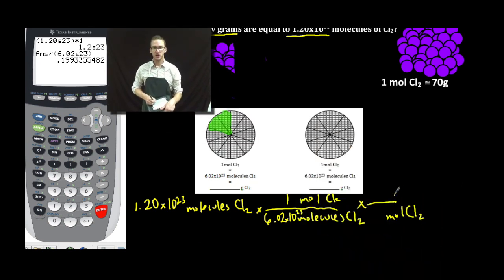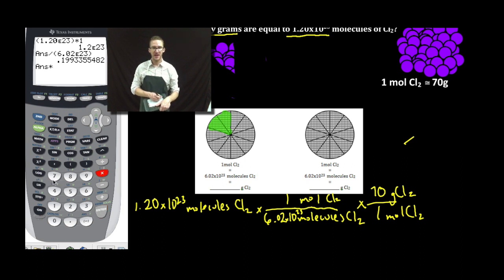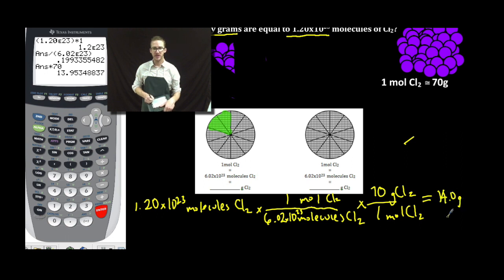Moles of chlorine on the bottom. Grams of chlorine on the top. One mole, again, about approximately 70 grams. It's coming from the periodic table. I just multiply my number of moles by that molar mass. So I'm only going to have about 14.0 grams of chlorine.